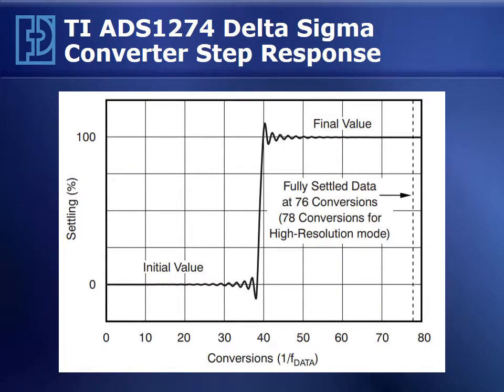The step response of the ADS-1274 looks like this. You have quite a bit of activity as a precursor to the step function — lots of ringing and undershoot — and then when the step comes along, you have overshoot and ringing. This type of transient behavior in response to transient signals makes these converters problematic when we're dealing with shock-type signals.